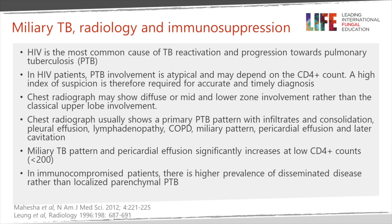Worldwide, HIV is the most common cause of reactivation, but other causes of immunosuppression are also relevant. Pulmonary TB can be atypical in HIV — the key thing to know is the CD4 count. You need a high index of suspicion in patients with HIV to attack the disease early. Sometimes you may get diffuse involvement rather than the classical upper lobe changes, or a primary pattern with consolidation, lymphadenopathy, and perhaps a pleural effusion.